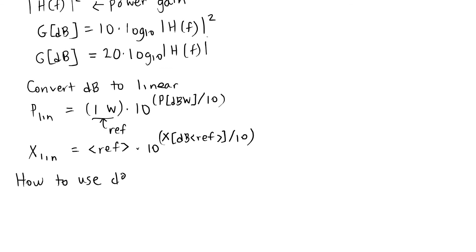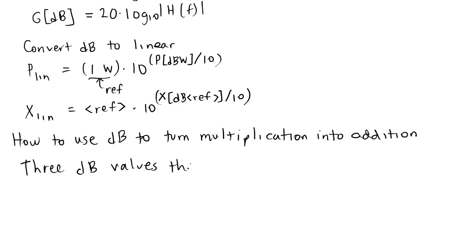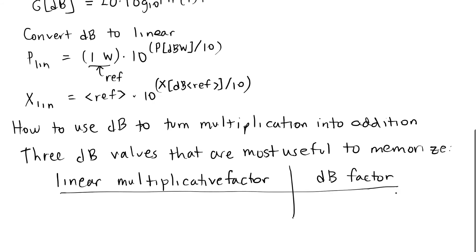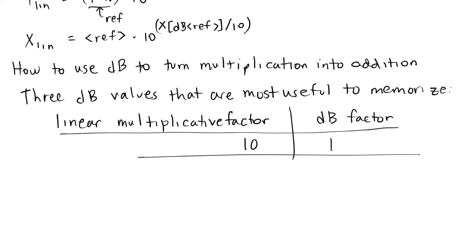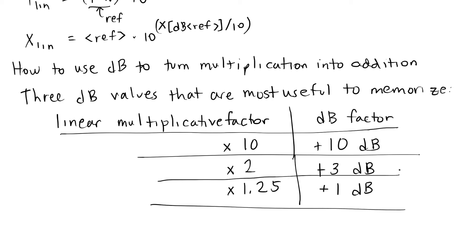I want to tell you how to use this to convert multiplication into addition and make our lives easier when designing communication systems. Three dB values are important as conversions between a linear factor and a dB factor. First, a factor of 10 converts to 10 dB — multiplying by 10 is the same as adding 10 dB. Second, multiplying by 2 corresponds to adding 3 dB. Finally, multiplying by 1.25 (or 5/4, a 25% increase) is about 1 dB. These are good engineering approximations.